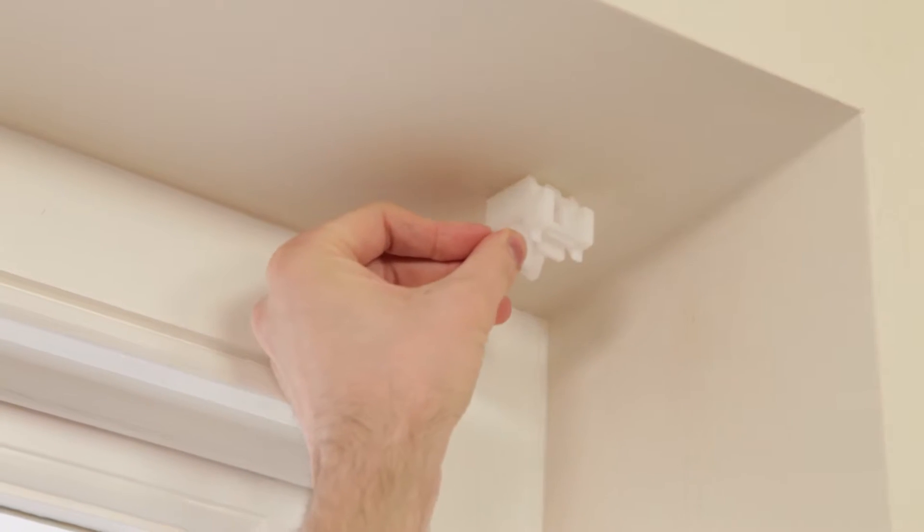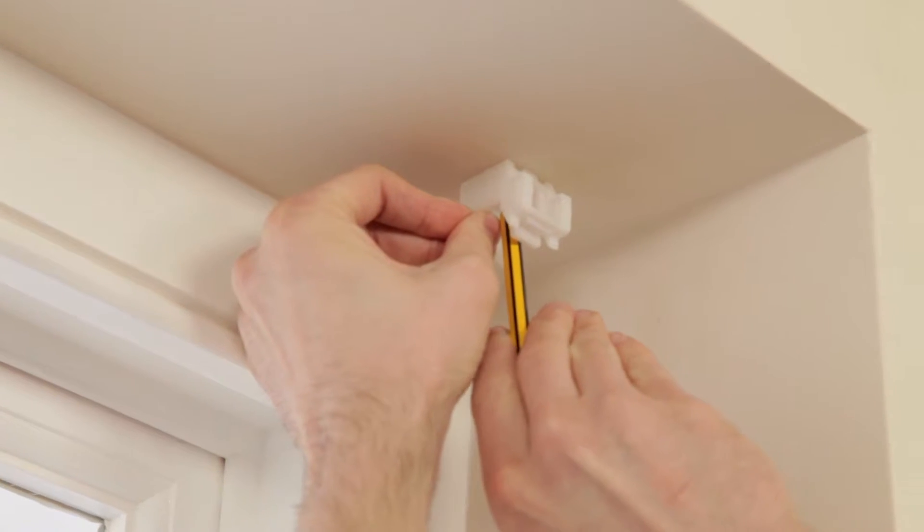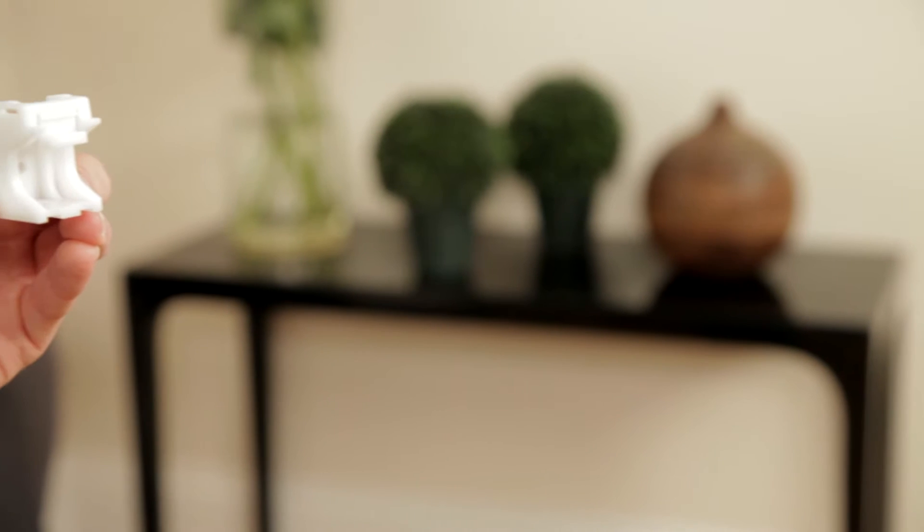You can fix the brackets to the wall in one of two ways. For top fixing, mark the holes on the top of the bracket. For face fixing, mark the holes through the back of the bracket onto the wall.